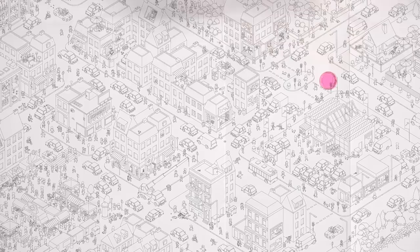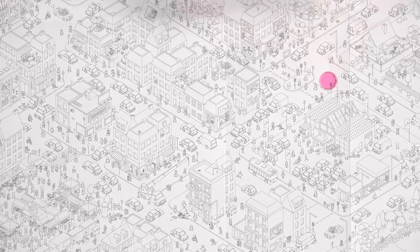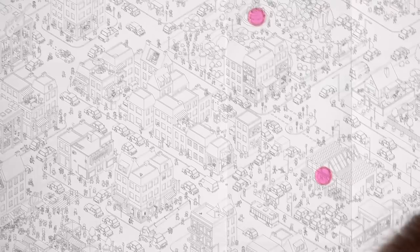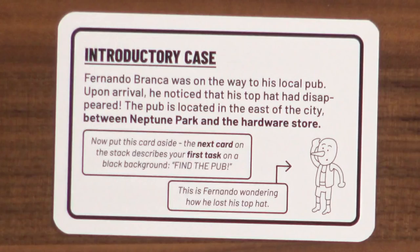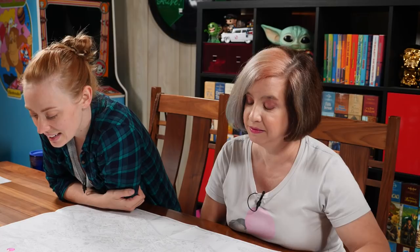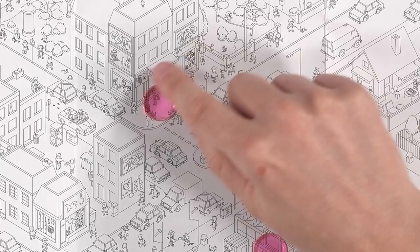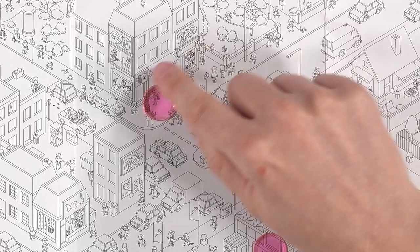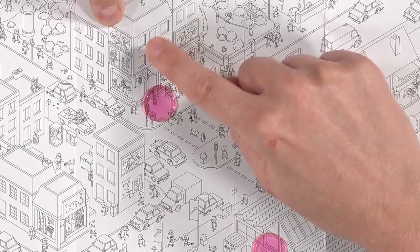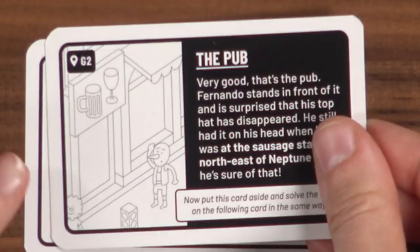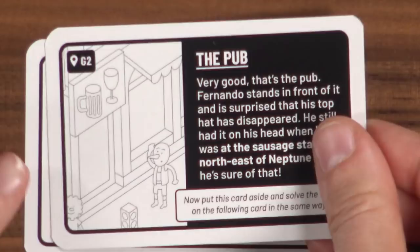Find the pub. Fernando has a very pointy Pinocchio nose and a snowman head. Here's the park and the hardware store - so we need the pub with Fernando between them. There he is - that's the pub, he's noticing his missing hat. There's the icon. Turn it over to see whether you're correct. Yes, we are correct - that's the pub.